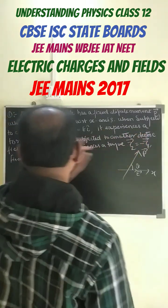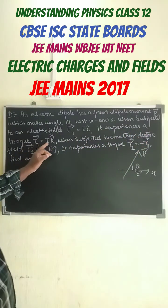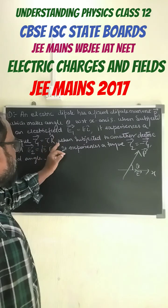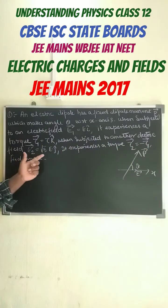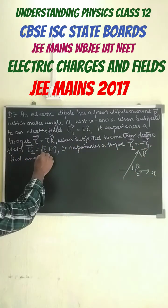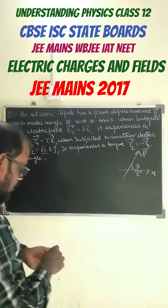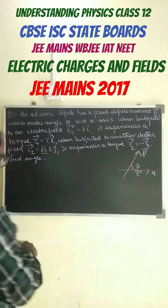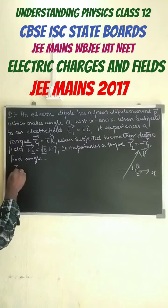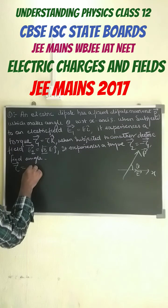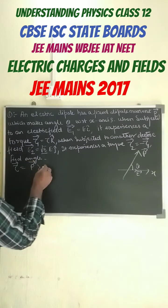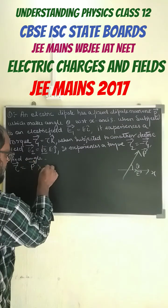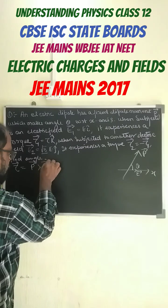It experiences a torque T1. Torque 1 is because of E1, and when subjected to another electric field E2 with the given value, it experiences torque T2. We already know the formula: torque equals the cross product of the dipole moment and the electric field.